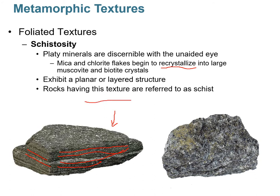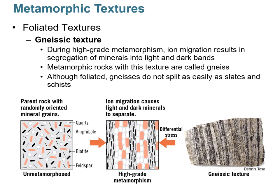Gneissic texture is another type of foliated texture where you get bands of light silicates and dark silicates. The temperatures are so high that minerals segregate: light silicates group together and dark silicates group together, creating gneissic banding. These rocks don't cleave — gneiss is very hard. In fact, gneiss is often used as kitchen countertops because many people like its flow patterns and banding, unlike the speckled look of granite.